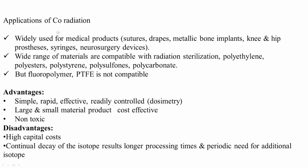Gamma radiation from cobalt-60 is widely used for medical products including sutures, drapes, metallic bone implants, knee and hip prostheses, and syringes. Compatible polymers include polyesters, polyethylene, polystyrene, polysulfones, and polycarbonate, though fluoropolymers like PTFE are not compatible. It is simple, rapid, effective, controllable by dosing, cost-effective, and non-toxic. However, it is expensive because a cobalt-60 source requires significant regulatory approval from atomic energy authorities, and there is continual decay of the isotope, requiring long processing times.